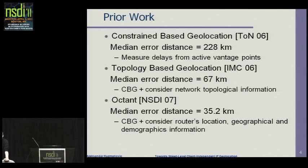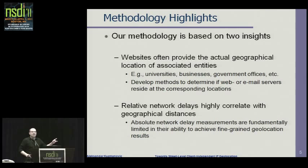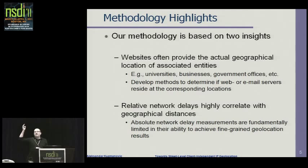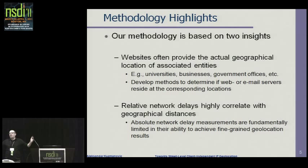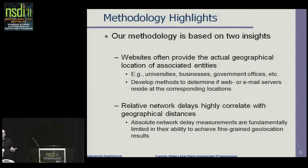If there is a moment in my presentation when you should stop looking at your laptops, now is the moment, because the next slide shows the two key ideas behind this paper. The first idea is that websites often provide the actual geographic location of the associated entities. I have a website, my web server is at Northwestern University, and on my front page there is my address — the actual geographic location. This holds for many entities: universities, businesses, government offices. We develop methods to mine this information from the web and use it for geolocation.